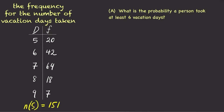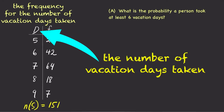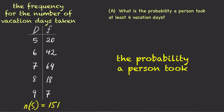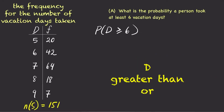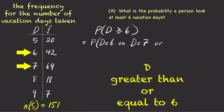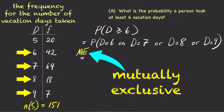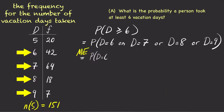What is the probability a person took at least 6 vacation days? If we let d stand for the number of vacation days taken, then we can write this as p of d is greater than or equal to 6. Since d greater than or equal to 6 means d equals 6, 7, 8, or 9, and each of these events are mutually exclusive, we can use the addition rule to rewrite this as p(d=6) + p(d=7) + p(d=8) + p(d=9).